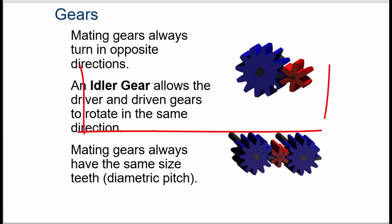Whenever you have two gears, both gears will turn in opposite directions no matter what. To make a gear go in the same direction, you have to add what's called an idler gear in the middle.